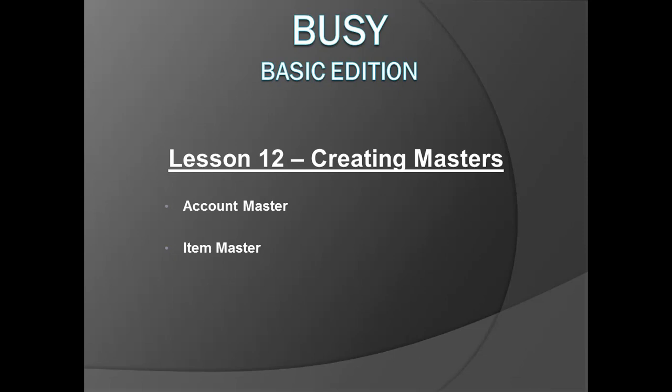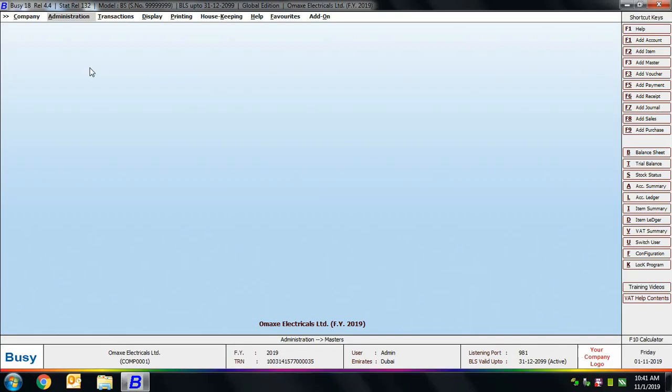Lesson 12: Creating Masters. In this chapter we'll discuss the masters provided in BUSY. Masters store static information that needs to be created only once, and then can be used in day-to-day transactions. Masters include account master, item master, tax category master, bill sundries, and more. In this chapter we'll focus on account master and item master. Account master covers parties, banks, expense accounts, and revenue accounts. Item master in BUSY refers to the items you deal, trade, or manufacture.